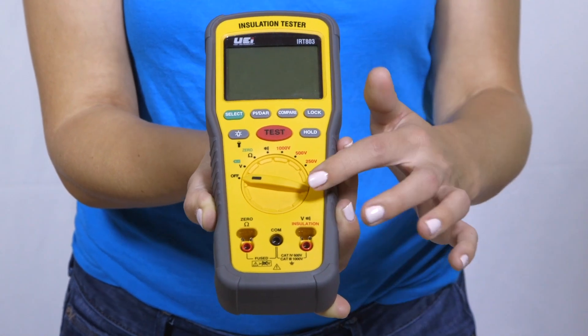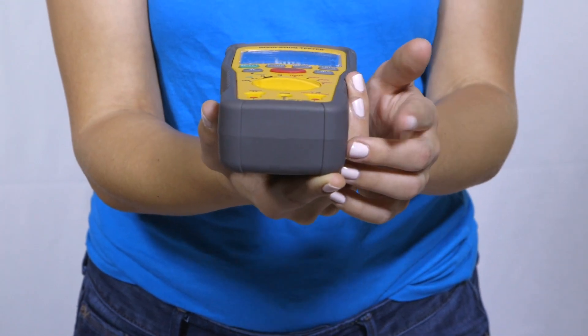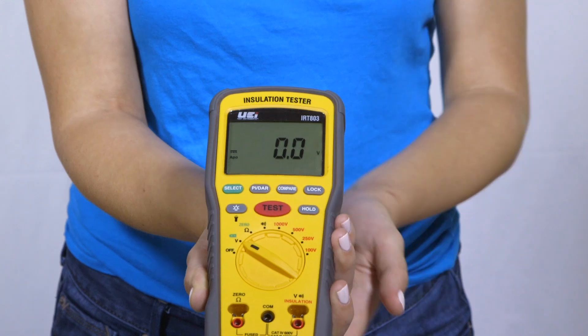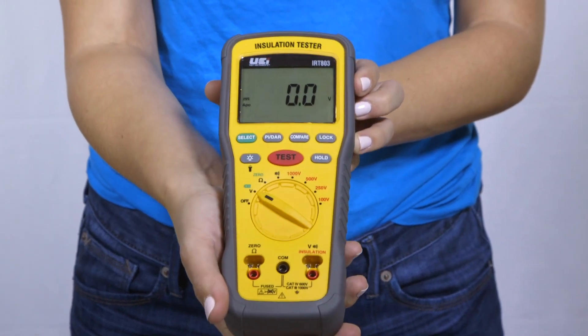It also has compare reading, rotary dial selector, protective rubber boot, auto power off, backlit display, work light, remote probe, and a one-year limited warranty.